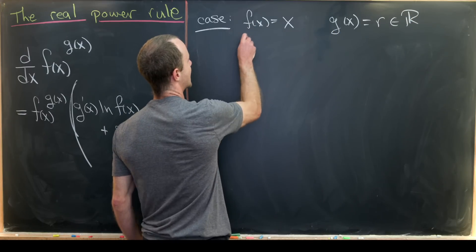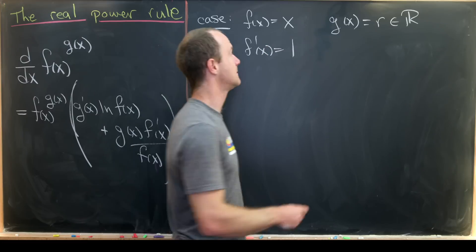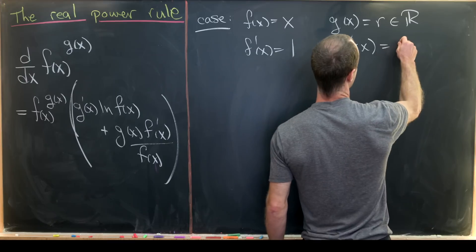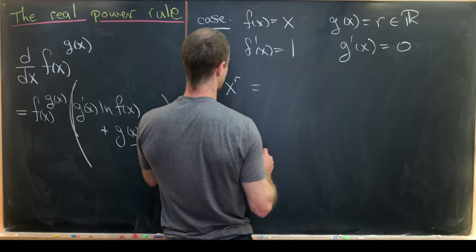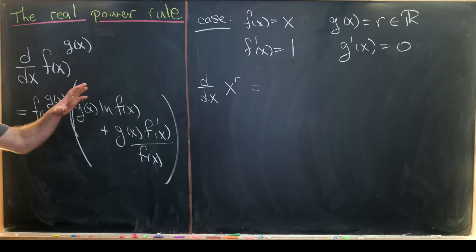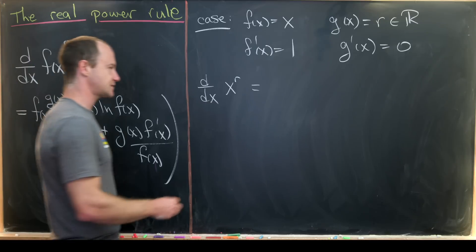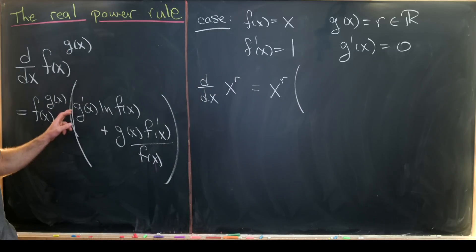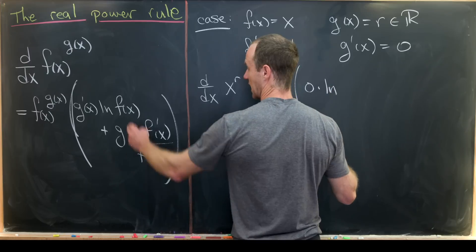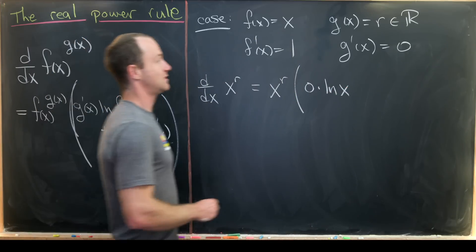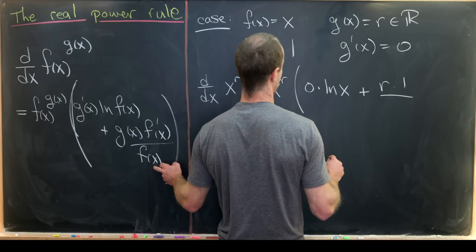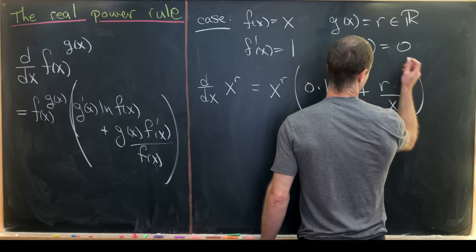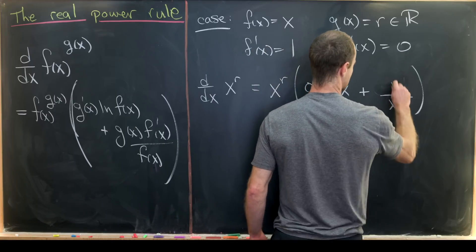If f(x) equals x, then f prime(x) equals one. And if g(x) is a constant r, then g prime(x) equals zero. So the derivative with respect to x of x^r becomes x^r times the quantity: g prime(x), which is zero, times the natural log of f(x), which is ln(x), plus g(x), which is r, times f prime(x), which is one, over f(x), which is x. We can simplify r times one as just r.